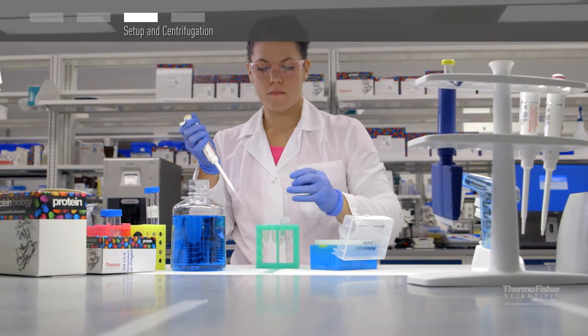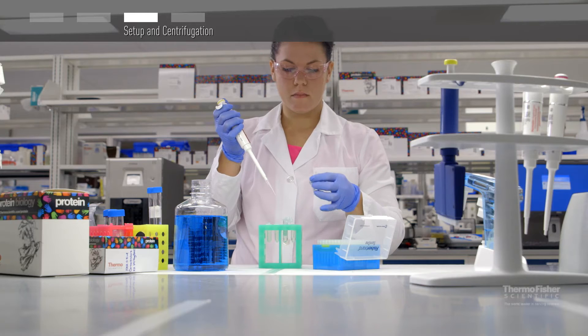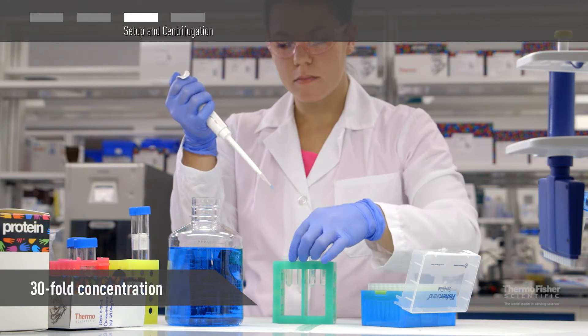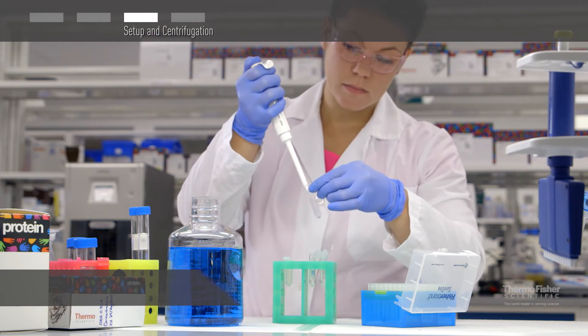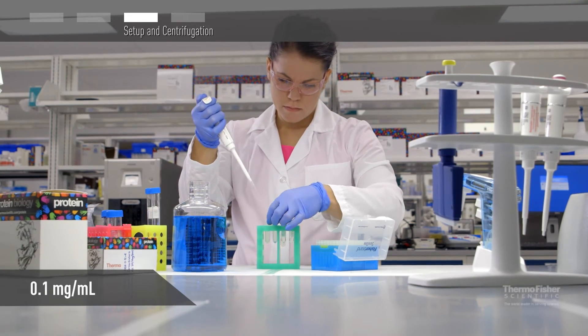Use a pipette tip to gently remove retentate from the sample chamber. Up to a 30-fold concentration can be obtained in as little as 15 minutes with protein solutions of 0.1 milligrams per milliliter or higher.